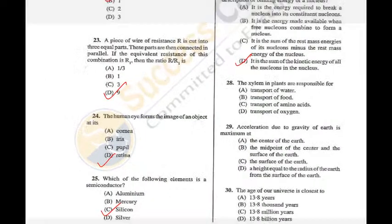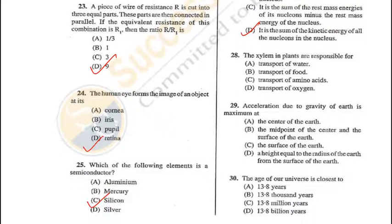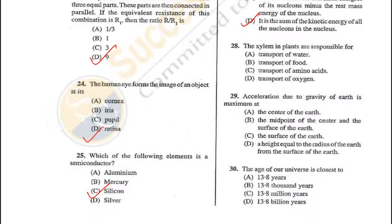Question 28: Xylem in plants is responsible mainly for transport of water — A is the correct answer. Question 29: Acceleration due to gravity of Earth is maximum at the poles, because poles are nearer to the centre of mass of the Earth — C (surface of earth at poles) is the correct answer.